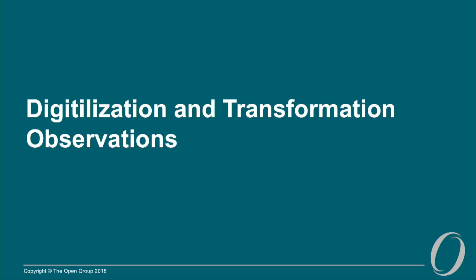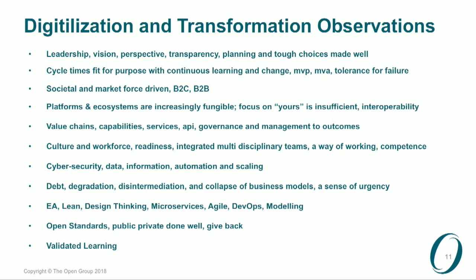Some observations on digitalization and transformation: as a result of these conversations, I've been back through materials on digital transformation from the Open Group and other reading. The phrases that come up almost universally are: leadership and vision, perspective, transparency, planning, and tough choices made well. Cycle times fit for purpose with continuous learning, change, minimal viable product, minimal viable architecture, and a tolerance for failure. What's going on digitally is not solely a technology change — it's actually changing the way society operates and thinks, applicable on both B2C and B2B sides.